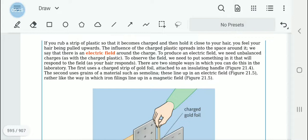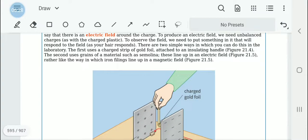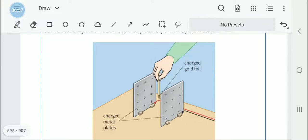To observe a field, we can put something that responds to it. For example, to observe a magnetic field, we can put iron dust and it will get arranged. To observe an electric field, we can have two charged metal plates, and when we bring a charged gold foil, it will get attracted, bend toward the opposite charge, and bend away from the similarly charged plate.